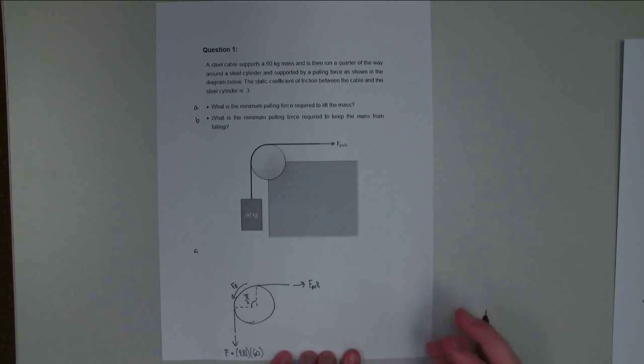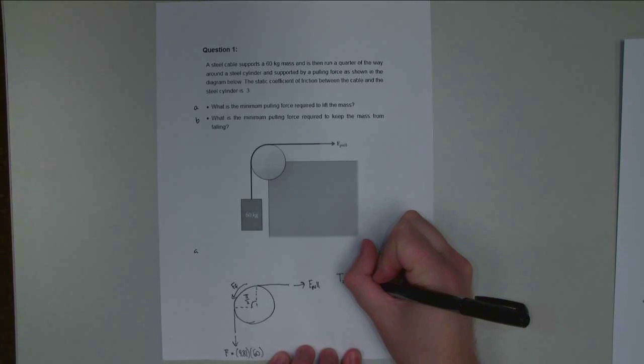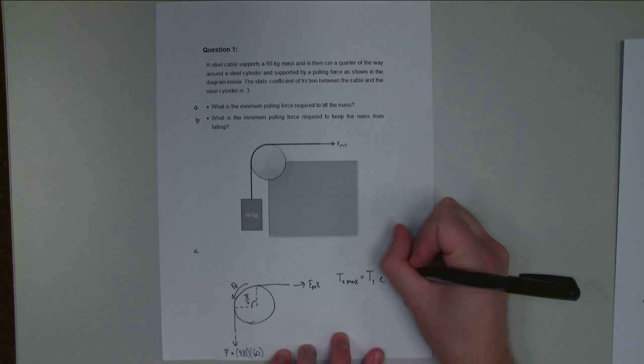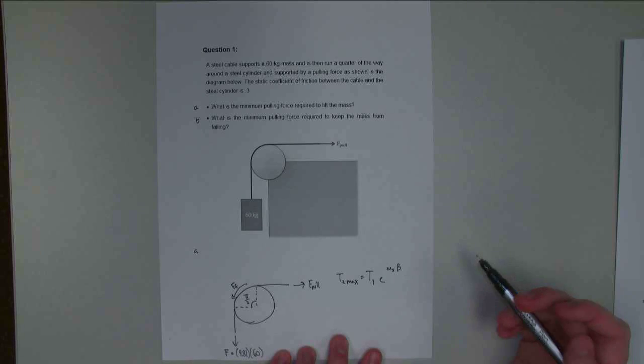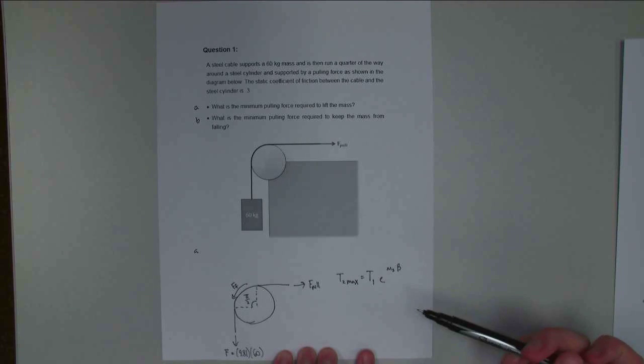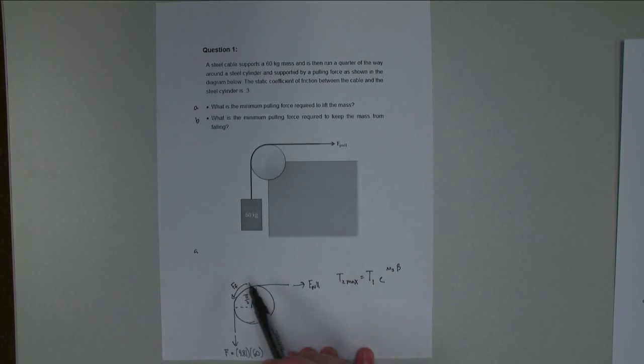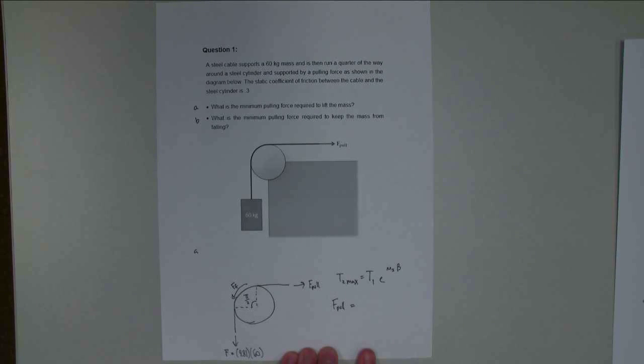Now I've got my equation. T2 max equals T1 times E to the mu static beta. I need to figure out, remember T2 max is always going to be the bigger force. If I've got the weight pulling down and the friction force pulling down, F pull, for this whole thing to be in equilibrium, needs to be the bigger force. So F pull is T2 max, and T1 is going to be the weight force.